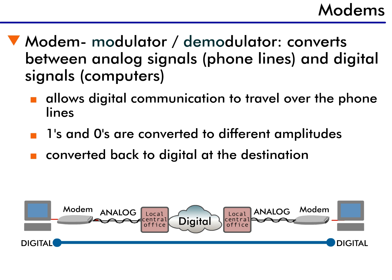Modem is actually a combination of the words modulator and demodulator. As you can see, communication from one PC to another goes through a lot of changes as it traverses the network. Within a computer, all communication processing is done with digital communication — just a series of ones and zeros. We install modems in computers to allow digital communication to travel over the phone lines.